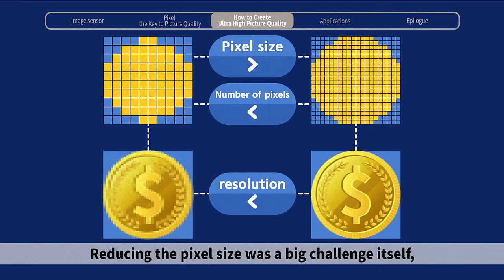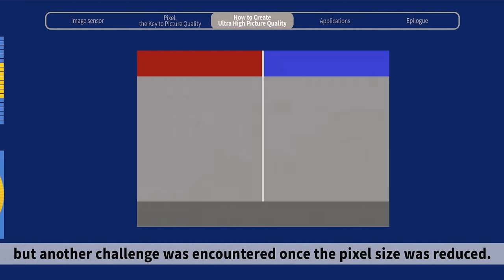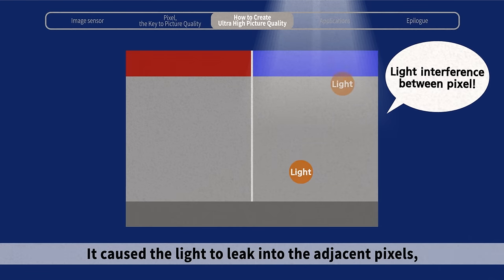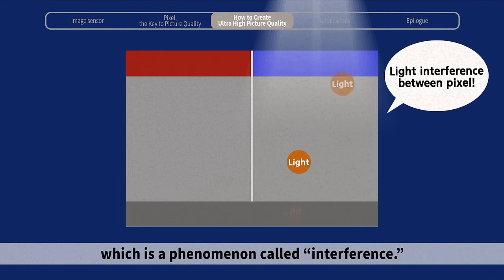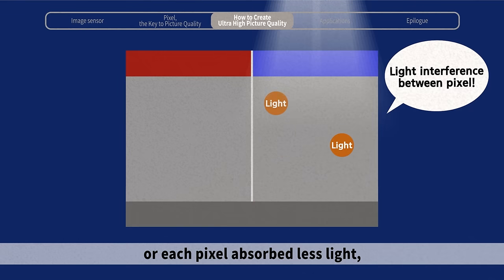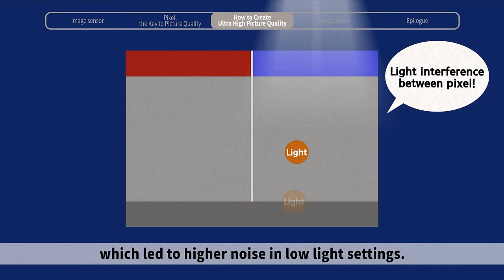Reducing the pixel size was a big challenge itself, but another challenge was encountered once the pixel size was reduced. It caused the light to leak into the adjacent pixels, which is a phenomenon called interference. Or, each pixel absorbed less light, which led to higher noise in low-light settings.